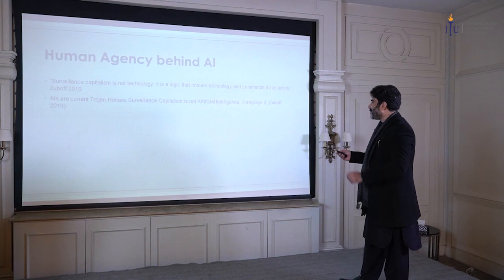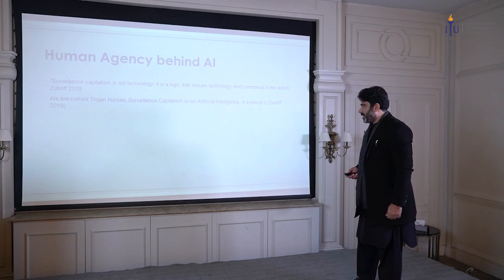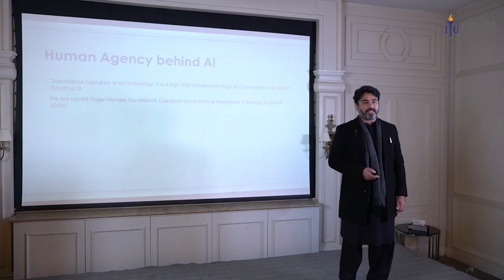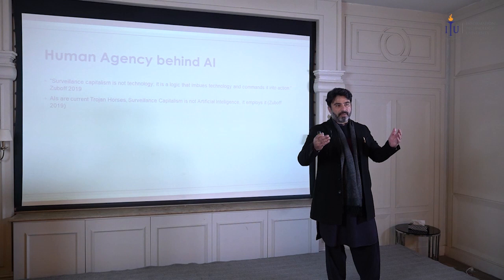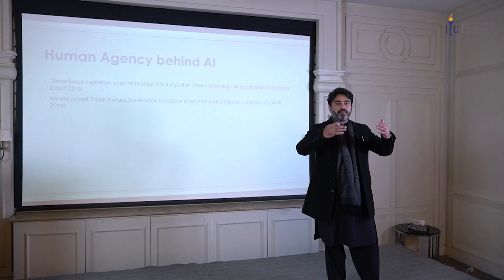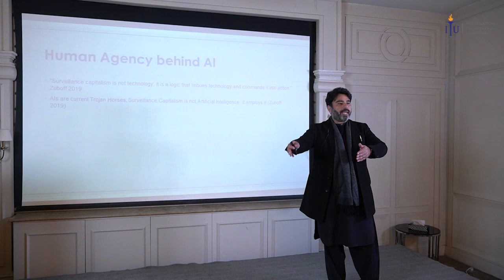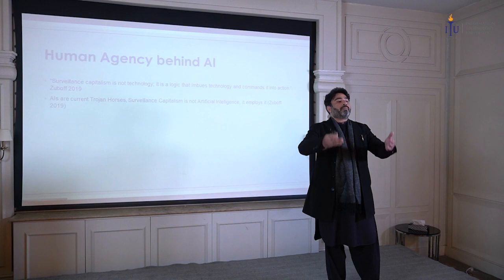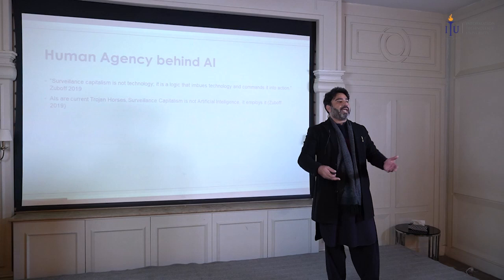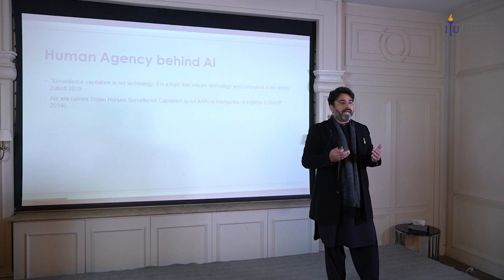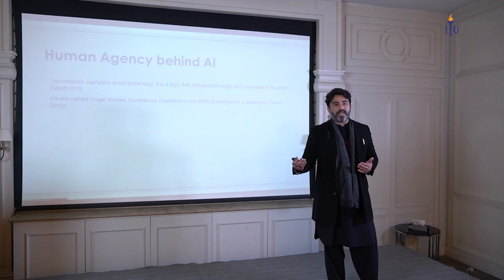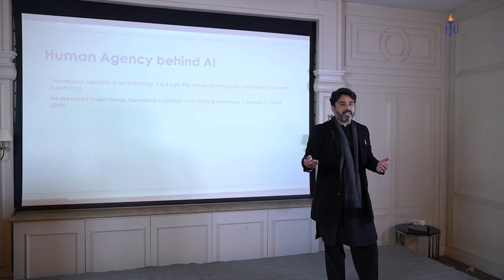Zuboff says AI is our current Trojan horse. Surveillance capitalism is not artificial intelligence — it employs it. So AI becomes a tool. A lot of narratives, more buoyant and more visible, try to accord agency to AI — but that is plain deception, because these systems may employ generative mechanisms and machine learning, but the command center is elsewhere. Those are human beings who make those decisions. If we look at the history of those who have colonized and exploited human beings in the past, this is not the first time. No amount of polite persuasion has ever convinced them not to do it.